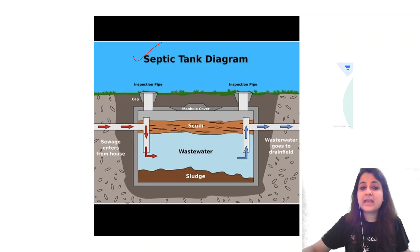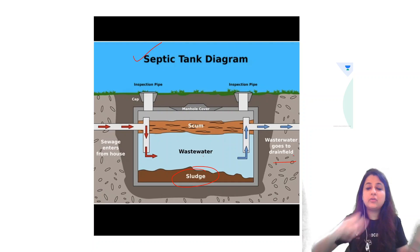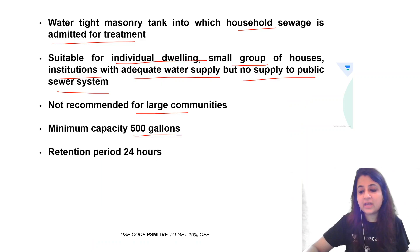So, you can just look at over here, the sewage enters from the house. Over here, anaerobic digestion takes place in which sludge is the solid part which settles out. The greasy part goes up and the rest, waste water goes to the drain field where aerobic oxidation takes place. So, you will be asked about the diagram and the two stages which are happening.